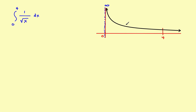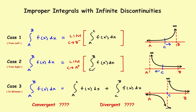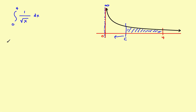Step one: pick some point c in the middle and find the definite integral from c to four. So step one is to find the definite integral from c to 4 of 1 over the square root of x, which we'll rewrite as 1 over x to the one-half power.